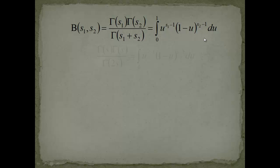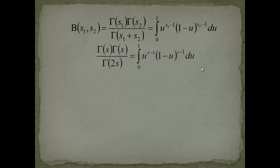We take s1 and s2 to be equal to a very special value, just s. So we get gamma of s multiplied with gamma of s over gamma of 2s equal to this strange-looking integral. You might ask why we do such a substitution — you can smell some kind of relationship to the zeta function here.